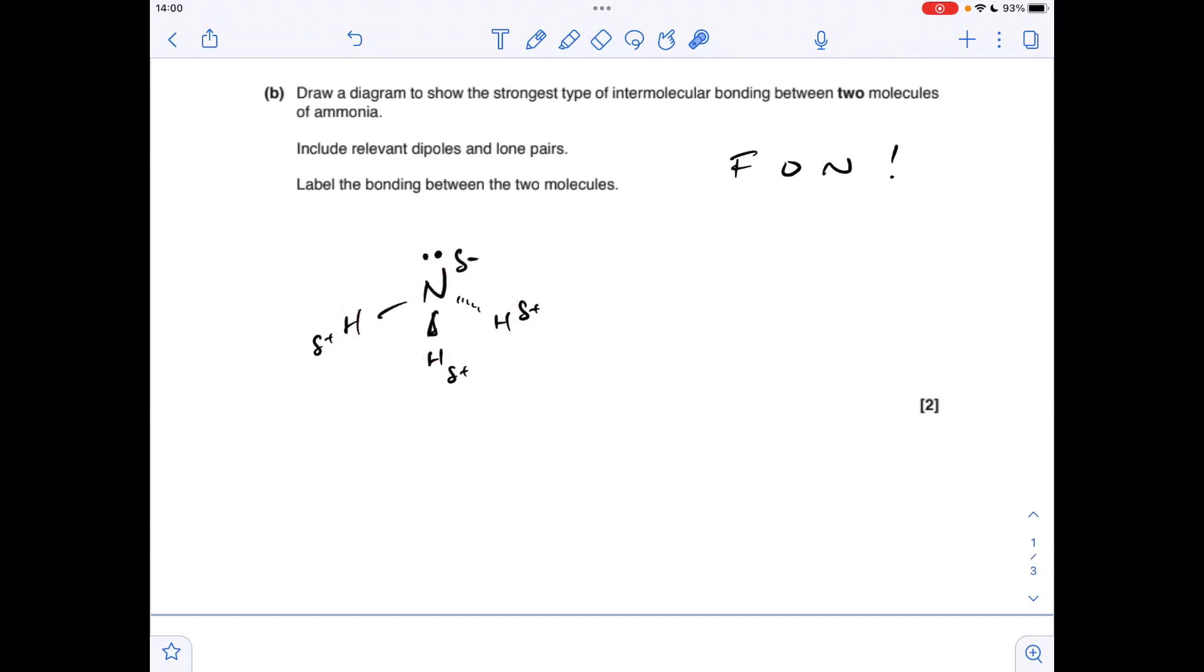So there's one of the two ammonia molecules we've got to draw. We've got obviously a dipole across each of the NH bonds, so it's delta minus on the nitrogen because it's more electronegative than hydrogen, so delta plus on the hydrogen. And we also need a lone pair on that nitrogen. There's your second ammonia molecule, and the hydrogen bond has to go from a lone pair on the electronegative atom—nitrogen in this case—to hydrogen on a neighbouring molecule.